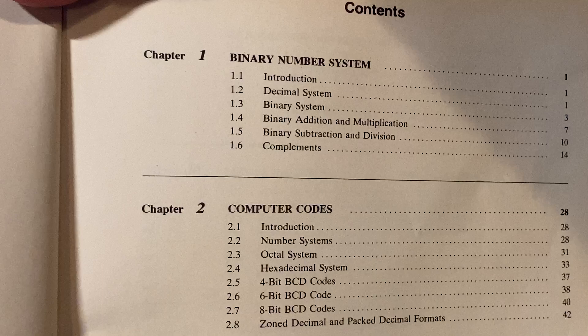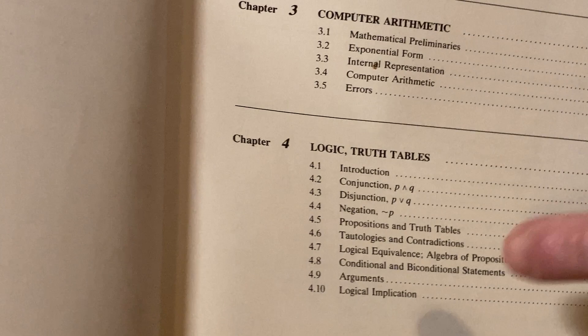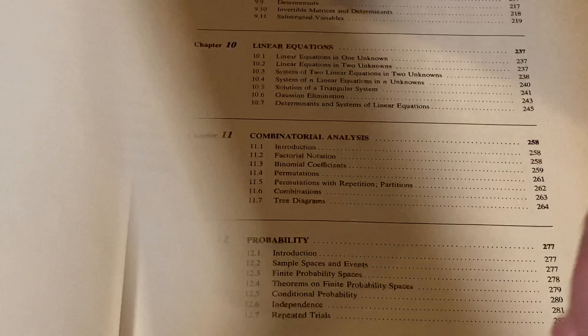For example, binary number system, that's something you would study in a discrete math class or perhaps in a computer science class. Computer codes, computer arithmetic, logic, and truth tables. That's something that you would study in discrete math or in a proof writing class if you are a math major.